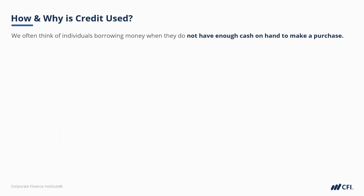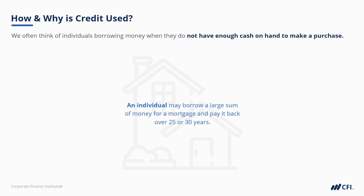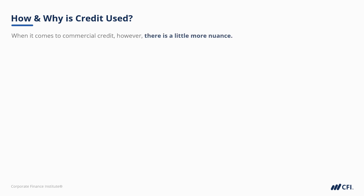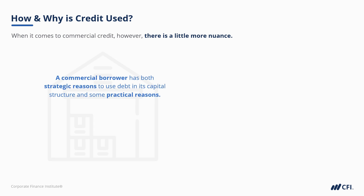We often think of individuals borrowing money when they don't have enough cash on hand to make a purchase, such as a home. Most people don't pay cash for big-ticket items like a house. These mortgage loans would be paid back over 25, maybe 30 years, making the monthly obligation much more manageable for an individual. When it comes to commercial credit, however, there's a little more nuance. There are some strategic reasons why a management team may wish to use debt in its capital structure, and also some practical reasons.